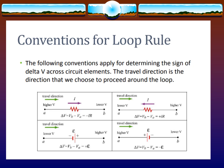In other cases with power sources, if traveling from lower V to higher V, delta V equals VB minus VA equals plus EMF. If traveling in the opposite direction, delta V equals VB minus VA equals minus EMF.